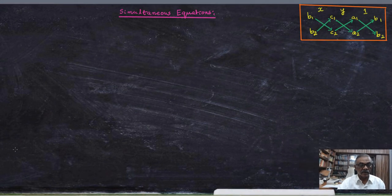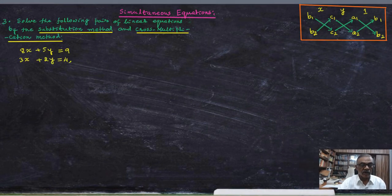Here I will solve the problem for the solution of two linear equations in two methods: one by substitution method and other by cross multiplication method. The problem I am giving here is 8x plus 5y equal to 9 and 3x plus 2y equal to 4. I would like to solve this by both methods.